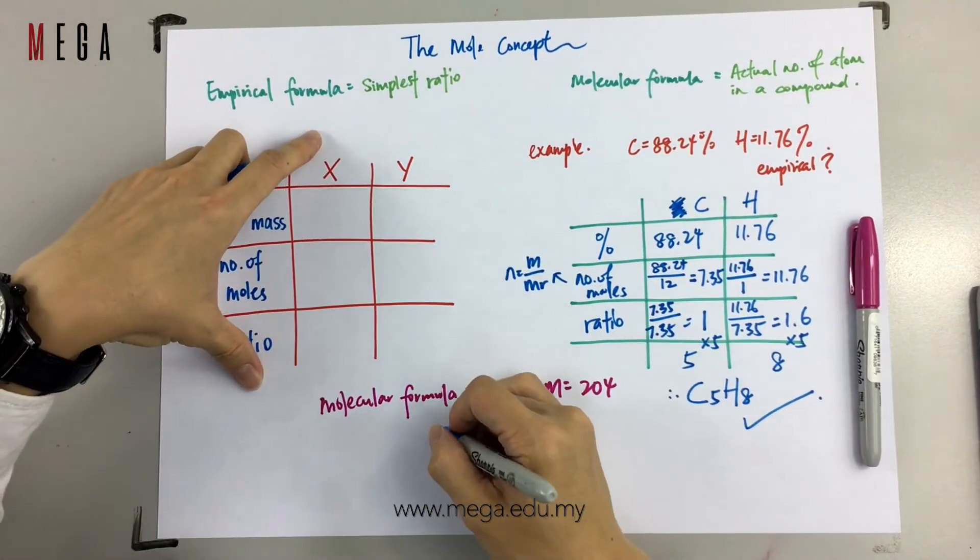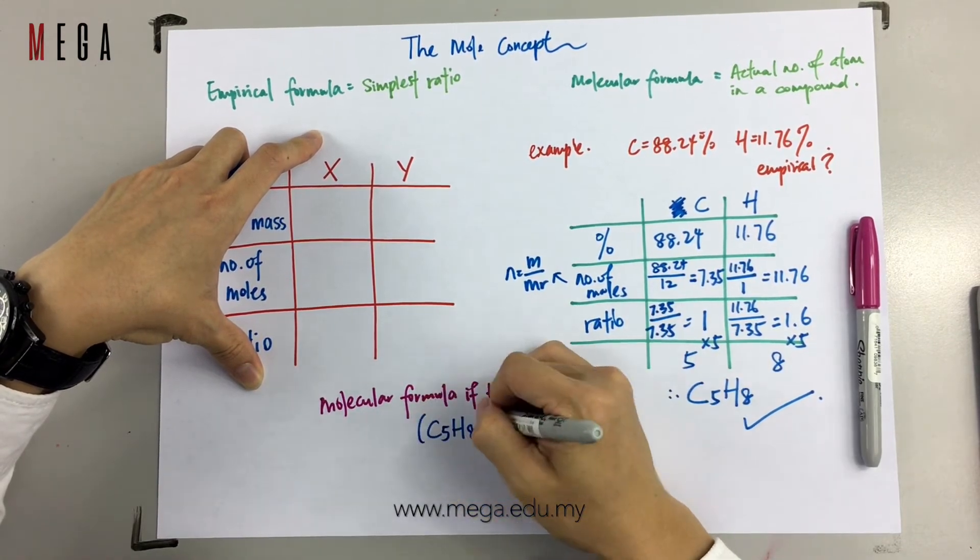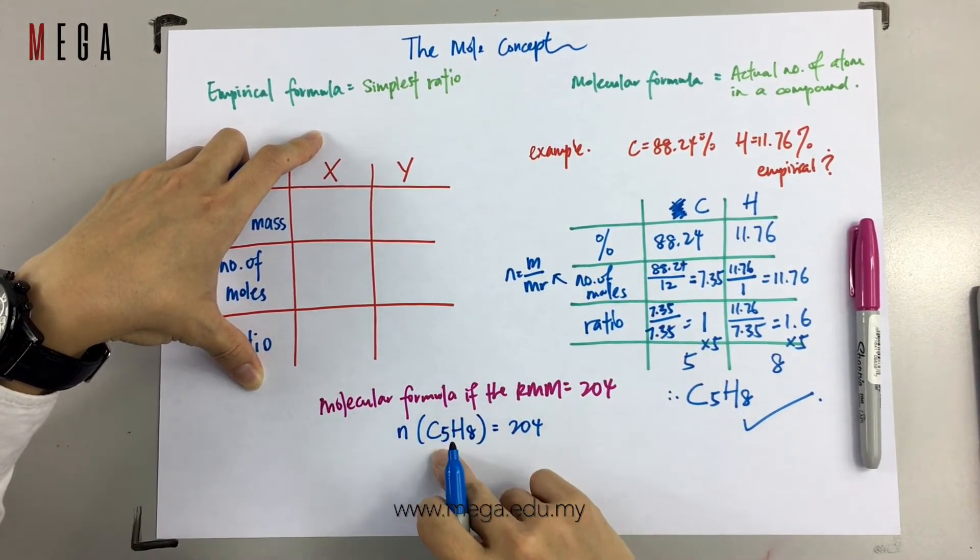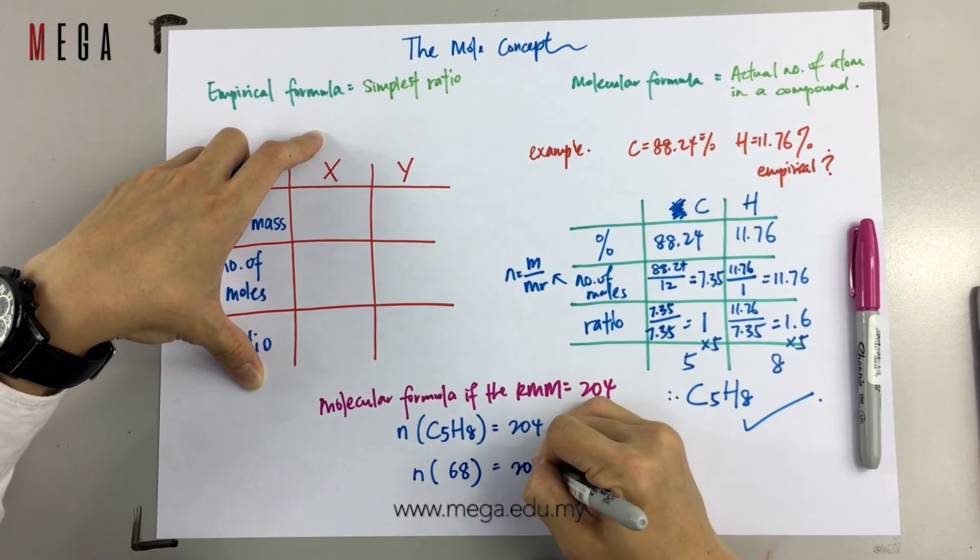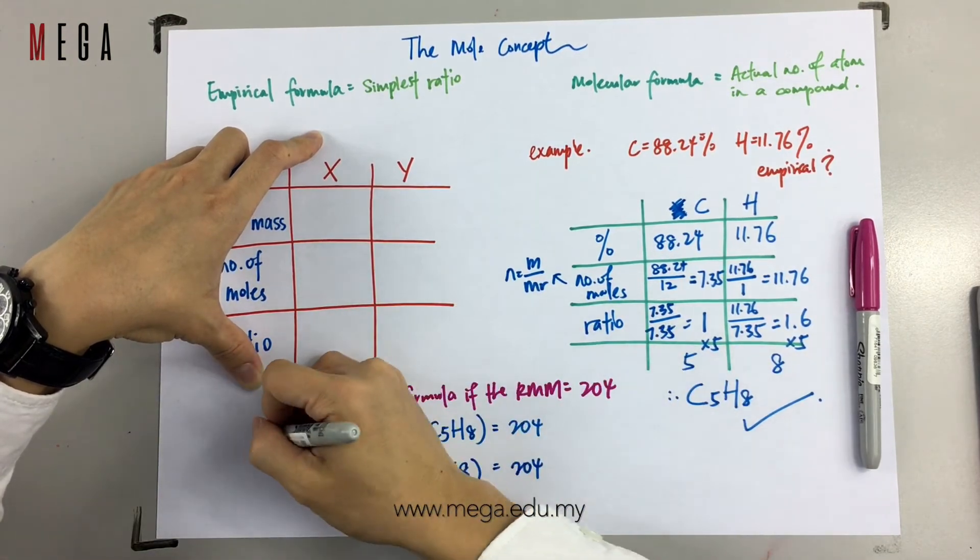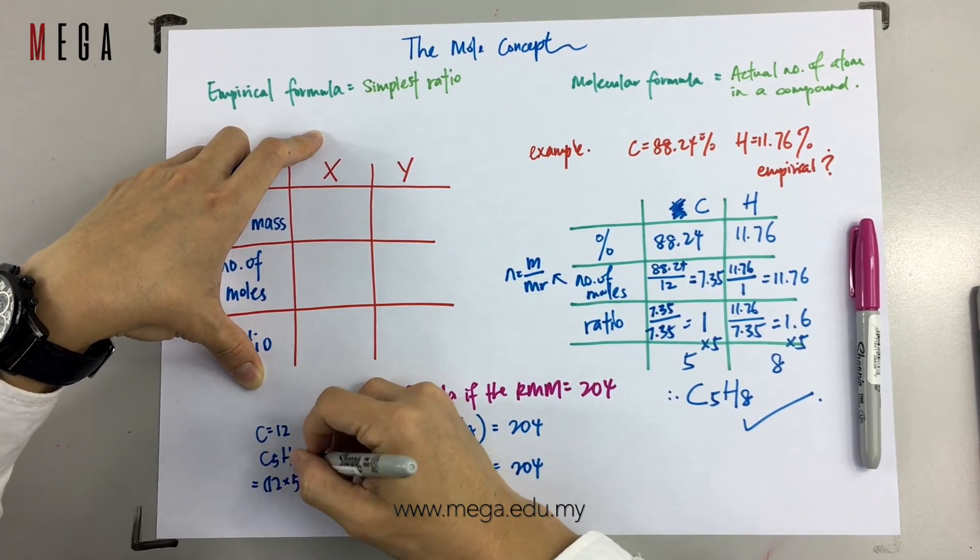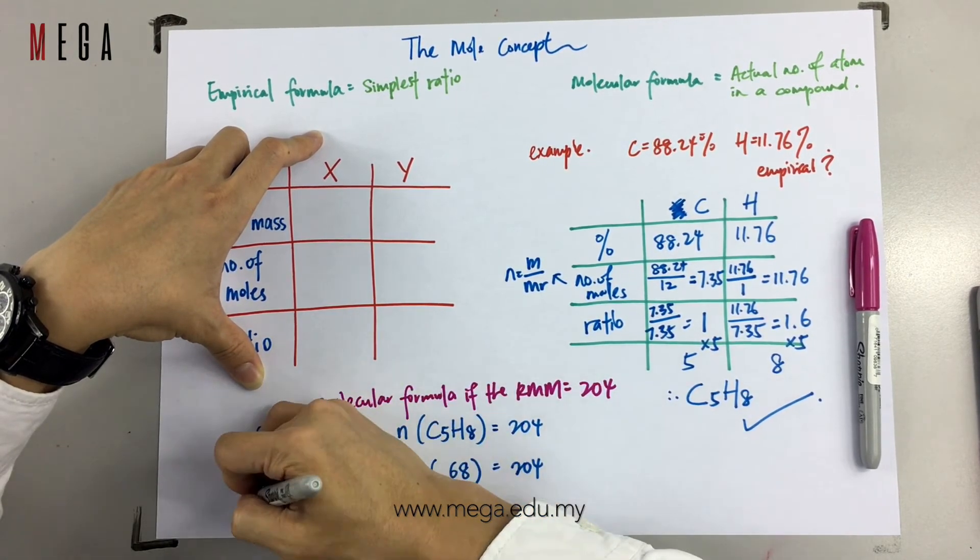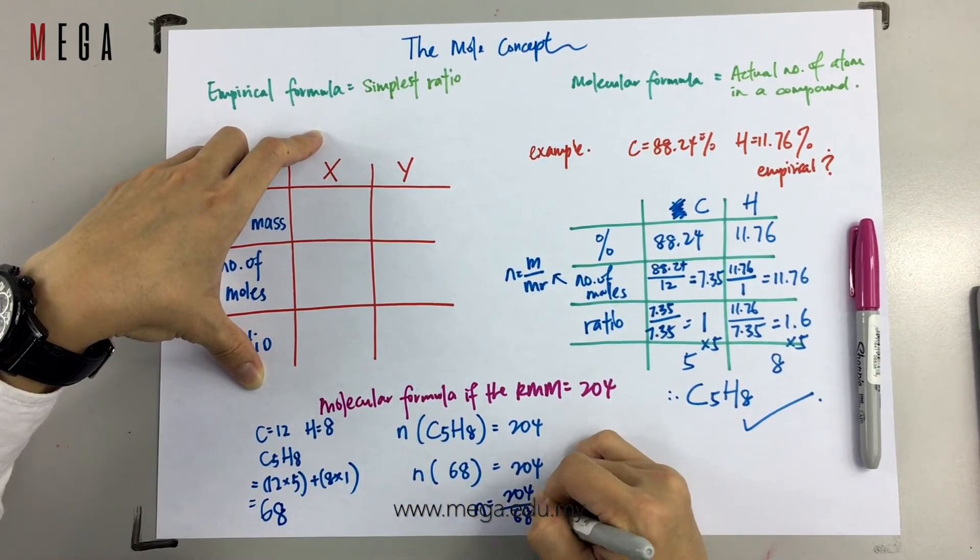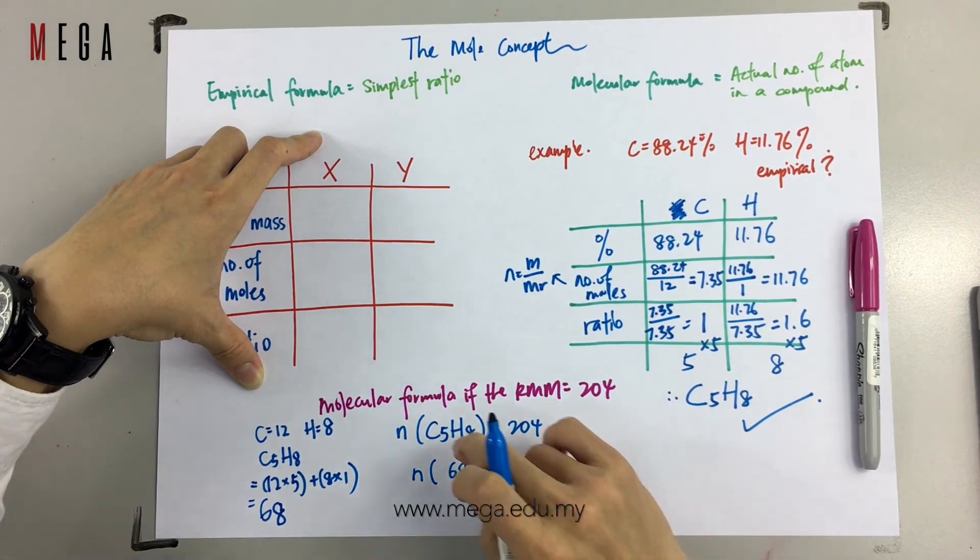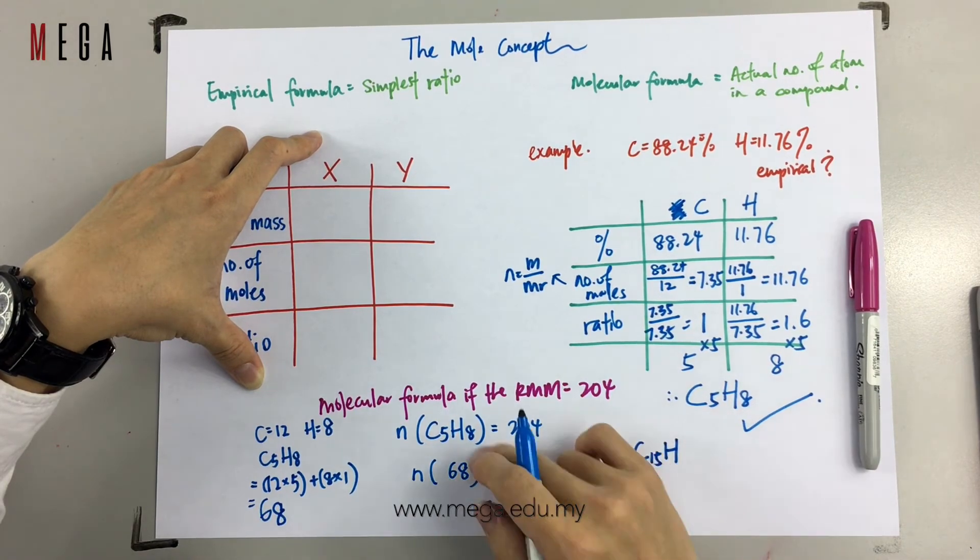Look for n. How many times the empirical formula? Eventually, you get n equals 3. So the whole empirical formula is multiplied by 3. You get C15H24. That's it. Thank you.